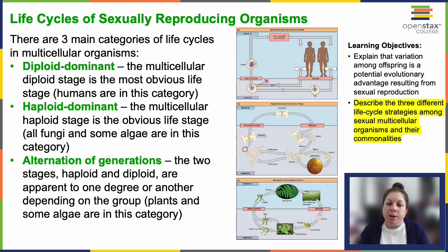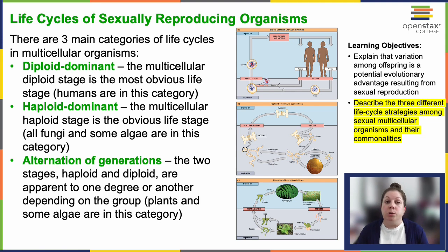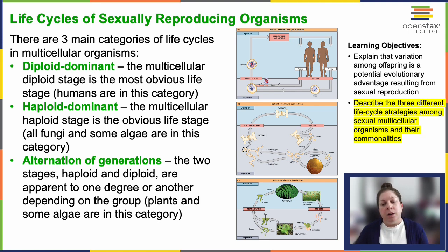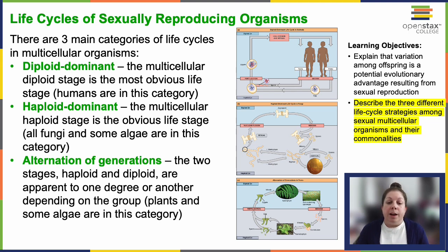There are three primary life cycle categories that exist in multicellular organisms. First, diploid dominant: in this type, the multicellular diploid stage is predominant and there's no significant multicellular haploid stage. Most animals, including humans, follow this pattern. Gametes are the sole haploid cells and arise from a diploid germline cell with no further haploid cell stages.